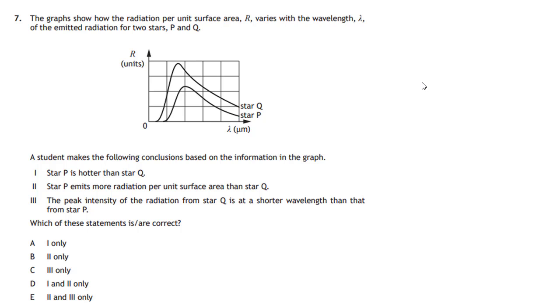Now back to the question. The graphs show the radiation per unit surface area R varies with the wavelength lambda of the measured variation for two stars P and Q. Let's go through the students' statements. First of all, star P is hotter than star Q. Well, the answer there is definitely not, because you can see it's got a smaller peak radiation. And its area power is a lot smaller in here. So it's definitely not going to give off a lot more radiation. And remember, the hotter the star becomes, the peak wavelength moves towards the violet area. So therefore it's definitely the short wavelength area. So definitely star Q is hotter than star P. So that statement is wrong.